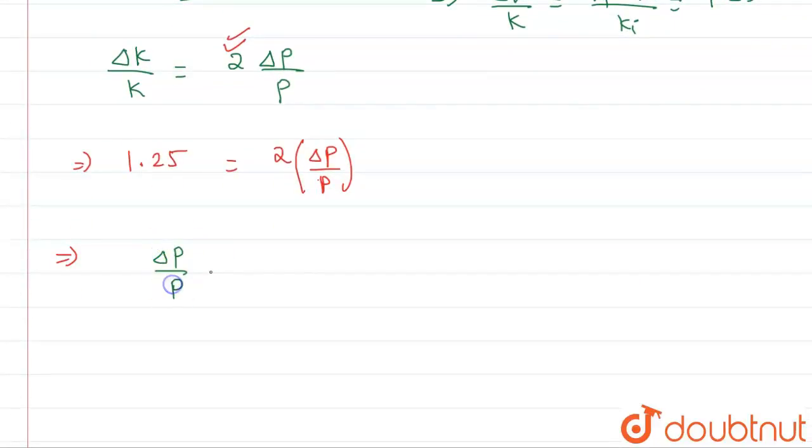So from here we will get delta p upon p which we need as 1.25 divided by 2. So this will be equal to 0 point, and since 125 is there, it will come out to be 625. So this is our final answer.